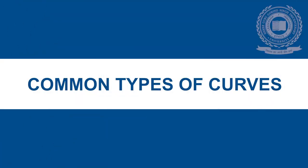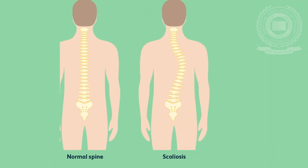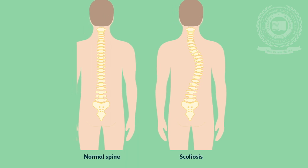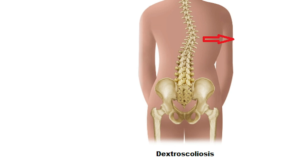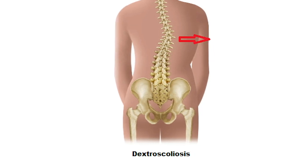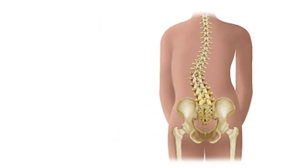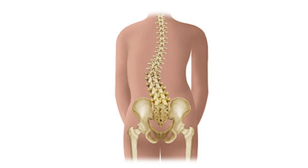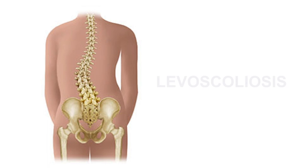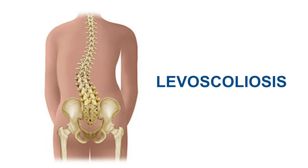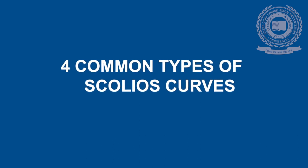A scoliosis curve will usually look like a backward C-shape and involves the spine bending sideways to the right, which is also called dextroscoliosis. Sideways spinal curvature on the left side of the back is more like a regular C-shape and this is called levoscoliosis. Let's discuss four common types of scoliosis curves.